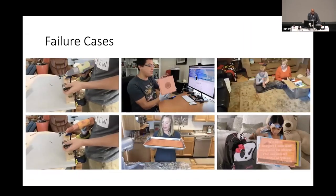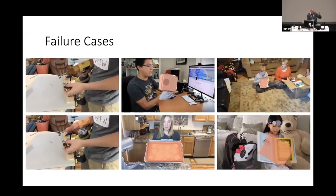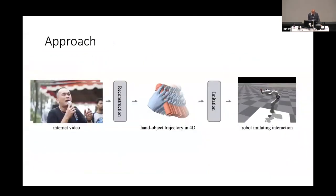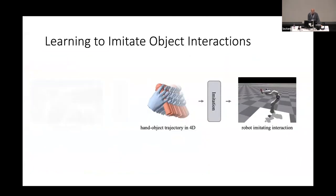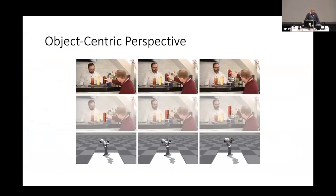We've done this not just for one case but hundreds. There are some failure cases — typically when part of the vision pipeline failed, like incorrect object segmentation or no correct CAD model. Then, how do we imitate object interactions? The challenge is that the human hand and robot hand don't have the same morphology: a human hand has five fingers with many degrees of freedom, while a robot hand might just be a parallel jaw gripper. The secret is: don't focus on the hand, focus on the object. The object must go through the same trajectory — that's the idea. Specify the reward in terms of the object's trajectory, and the robot must achieve that given its own morphology.